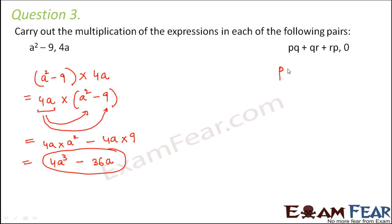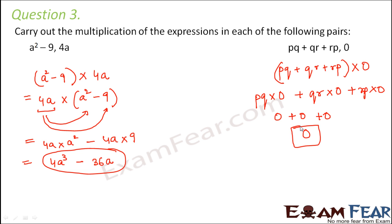Here you have (pq + qr + rp) multiplied by 0. We all know that anything multiplied by 0 gives 0. But still, let us try to apply the distributive law and see if that holds true for this also or not. This can be written as pq into 0 plus qr into 0 plus rp into 0. Each of these would be 0, so therefore the final result would be 0.